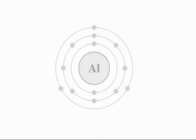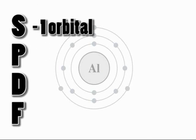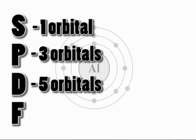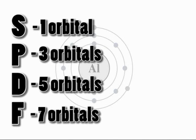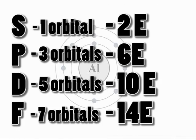There are four different types of sublevels: the S, the P, the D, and the F sublevels. The S has one orbital, the P has three, the D has five, and the F has seven. And remember, each orbital holds two electrons.